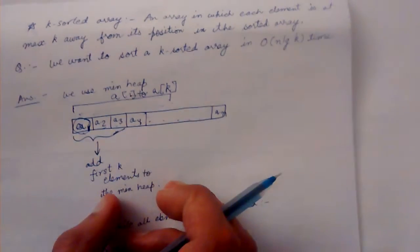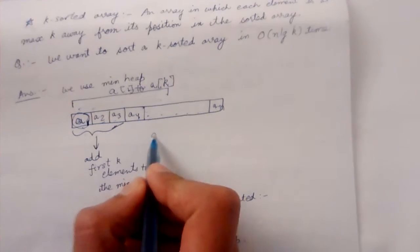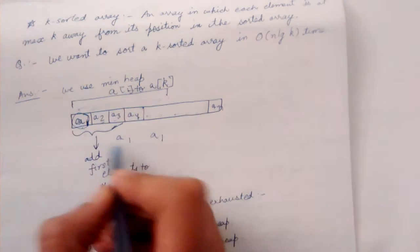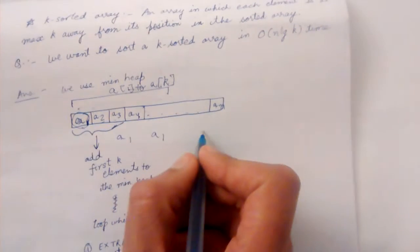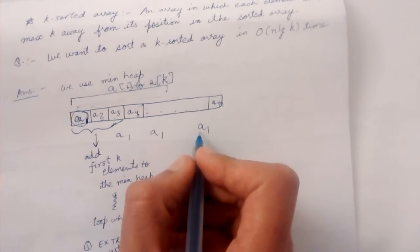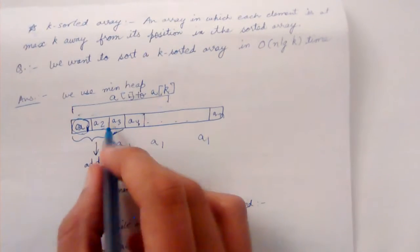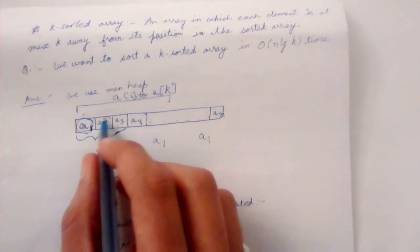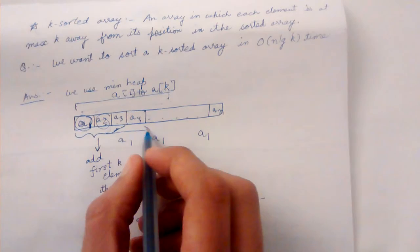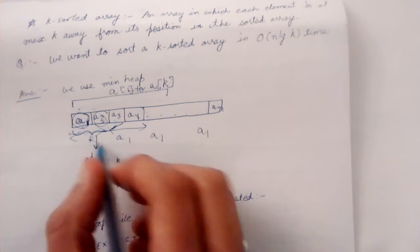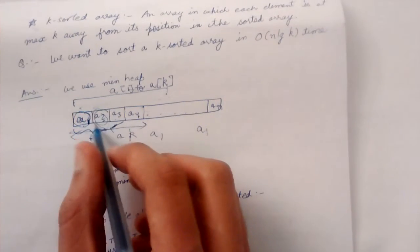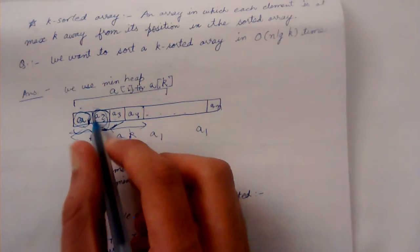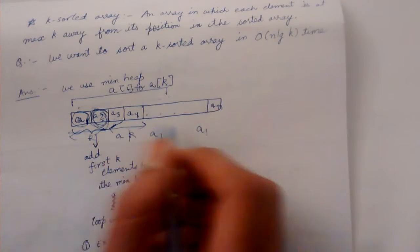In the final sorted array, a1 can be somewhere within this range — it can't lie beyond this area. This is what we are sure about. Similarly for a2, it can be at most k distance away on both sides from its position in the unsorted array. It can be here, here, or here — but not further away than that.